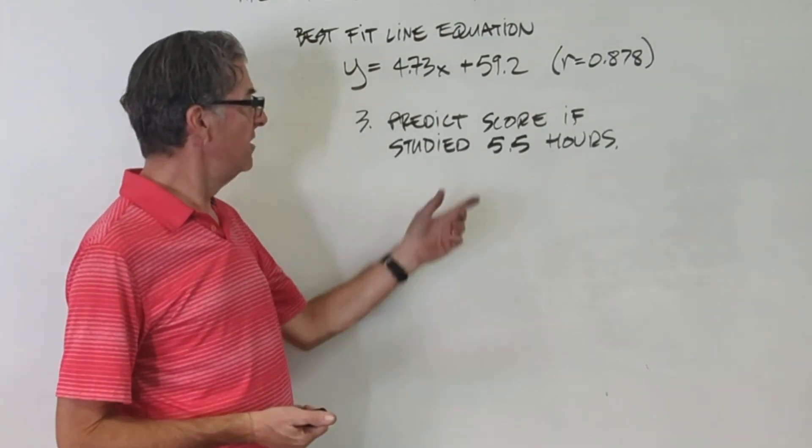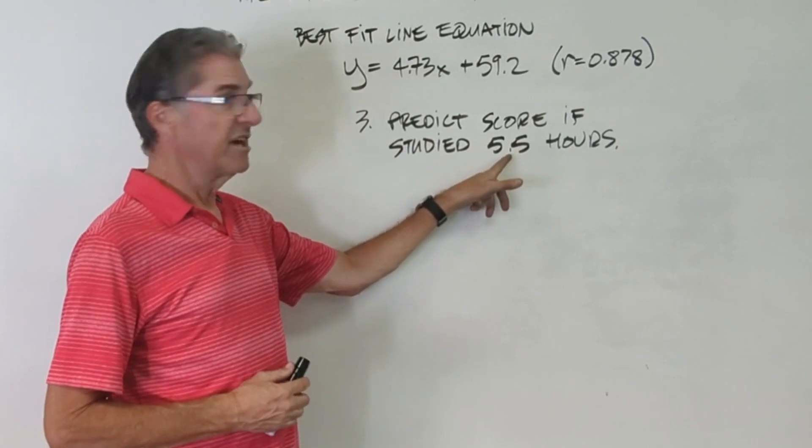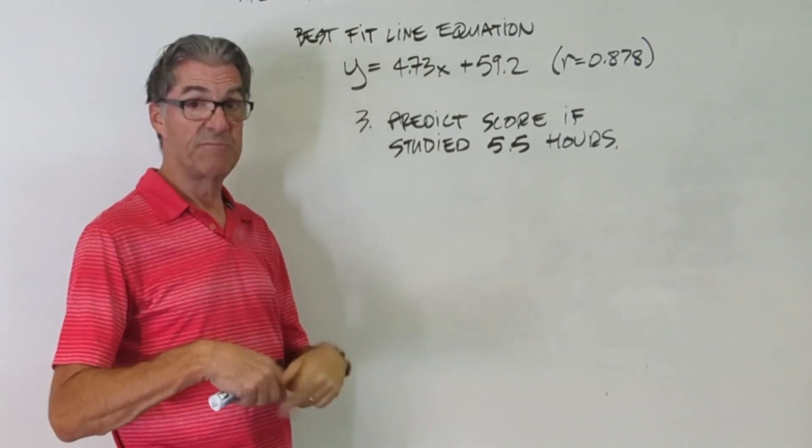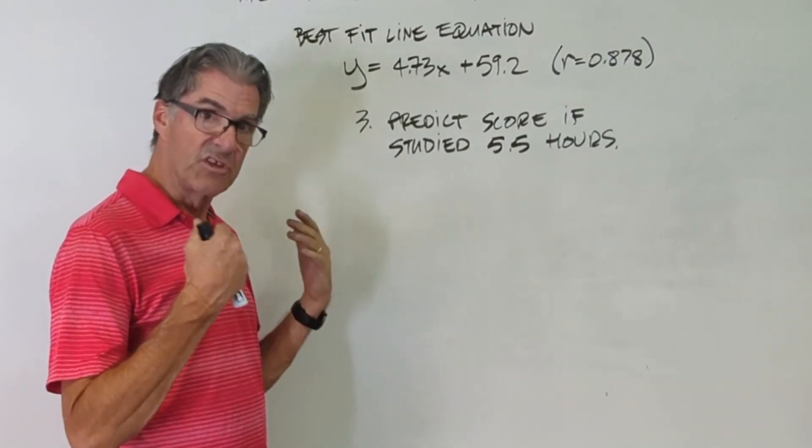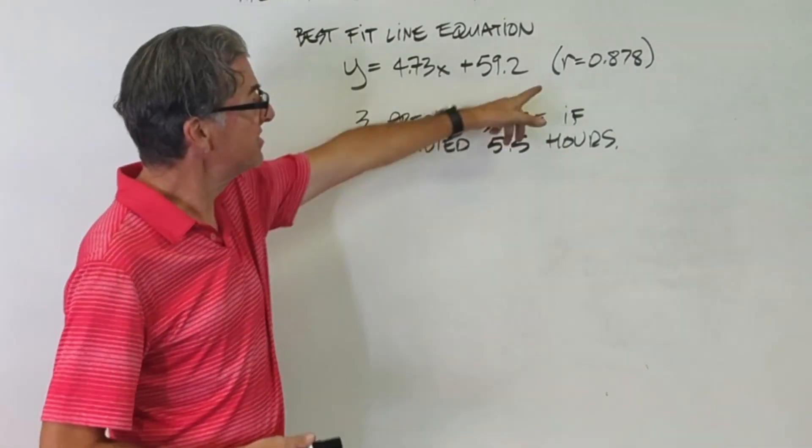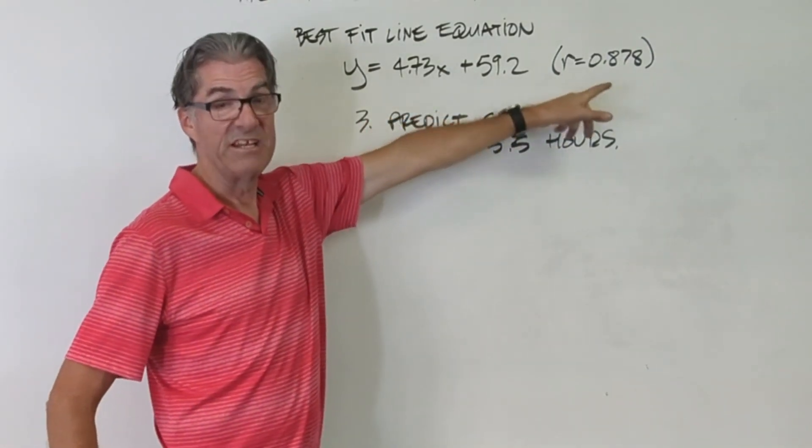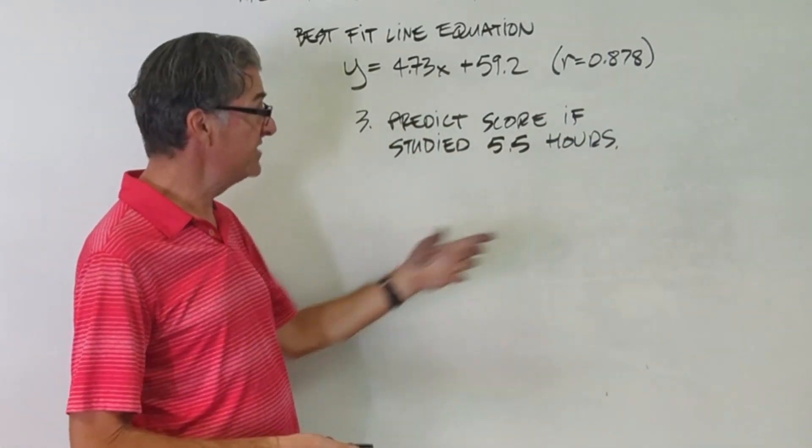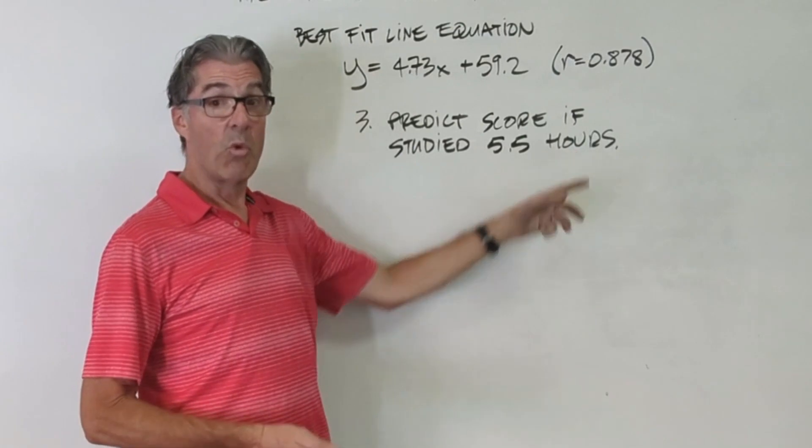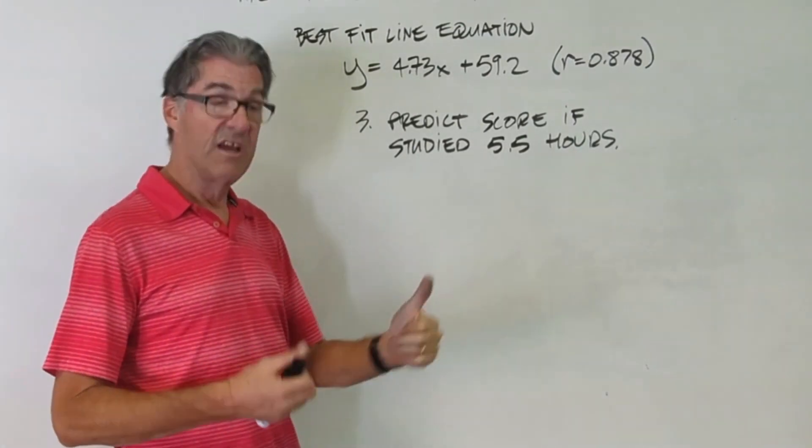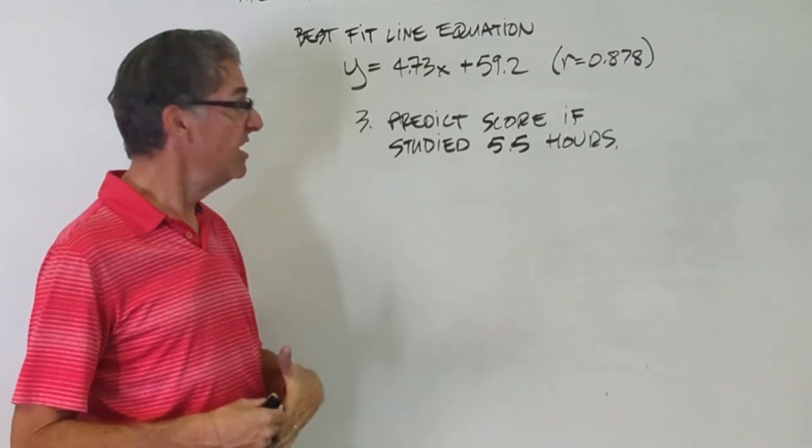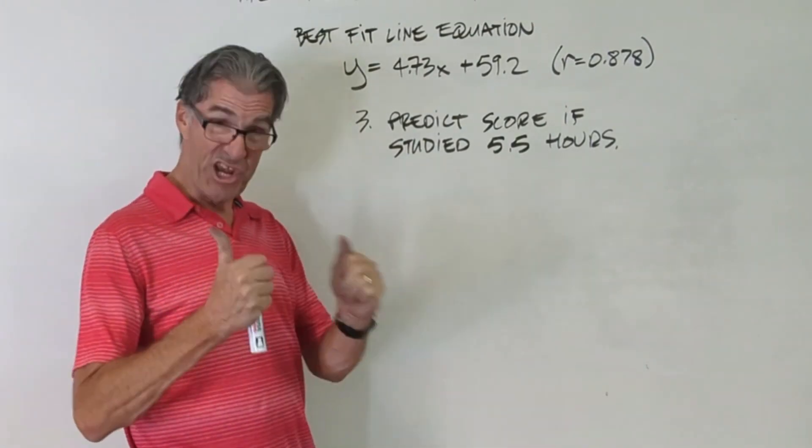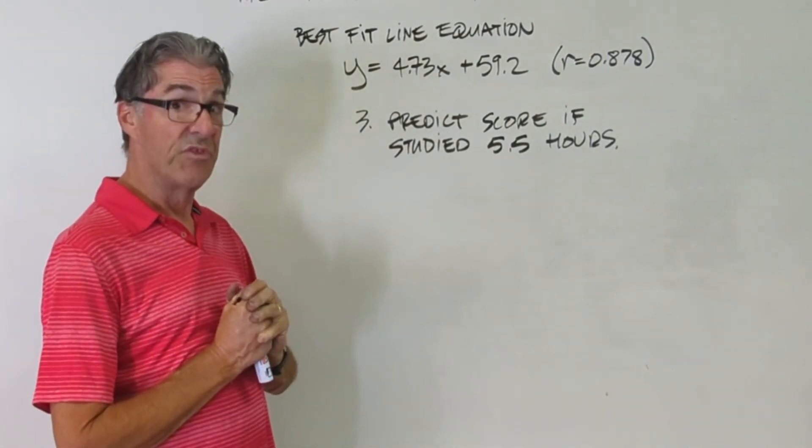Okay, let's try this one. Predict the score if they studied for 5.5 hours. Now let's look at our conditions before we do this. Is the correlation strong? Yes. Our value is 0.878. Is this predicting y given the x? Yes. The x is hours. The y is the score. Check. Is this interpolation? Is this value within our data set? Yes. Check. So now we can actually do this prediction. So go ahead and pause the video and predict the score for 5.5 hours of study time.